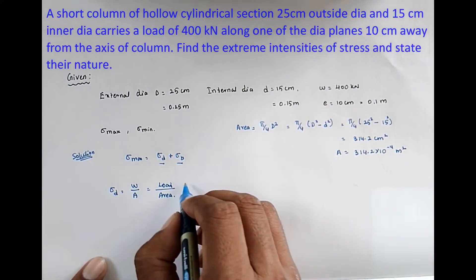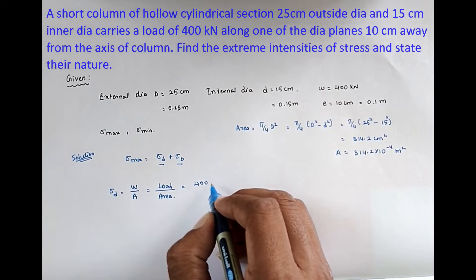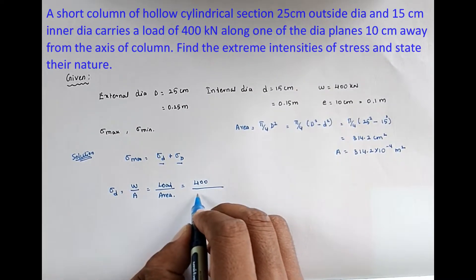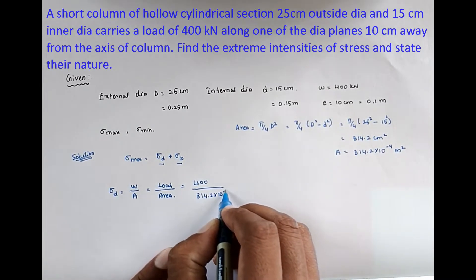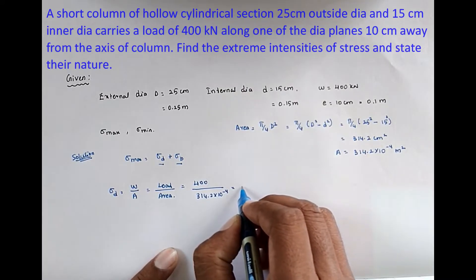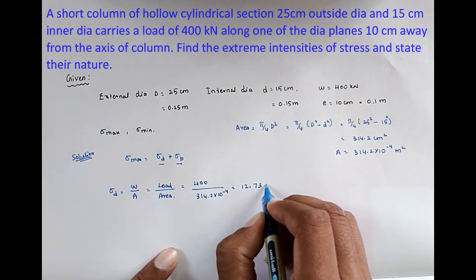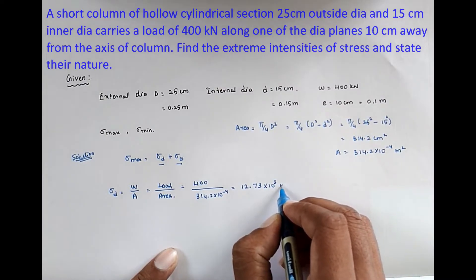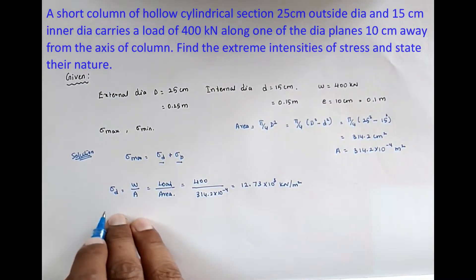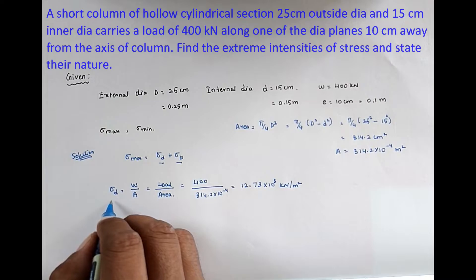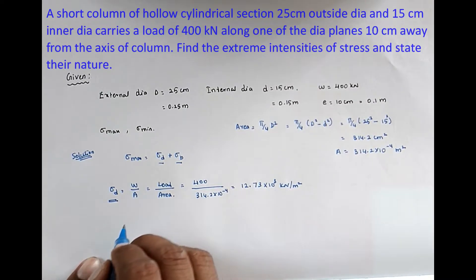Substituting into the direct stress formula: sigma_D = W / A = 400 kN divided by 314.2 × 10⁻⁴ = 12.73 × 10³ kN/m². That is the direct stress value.